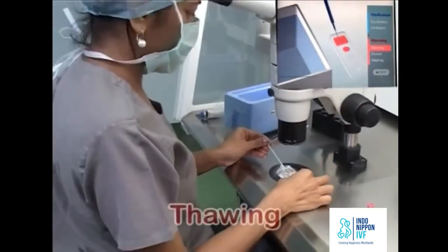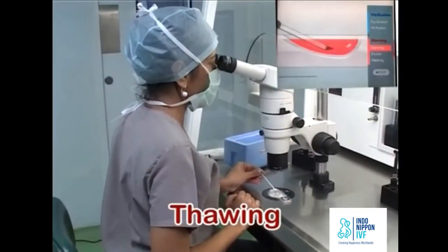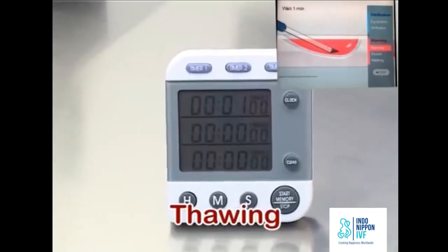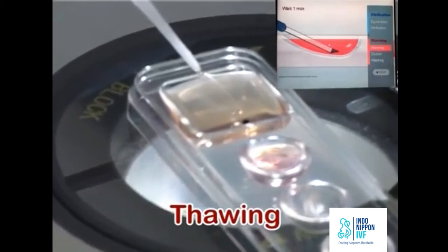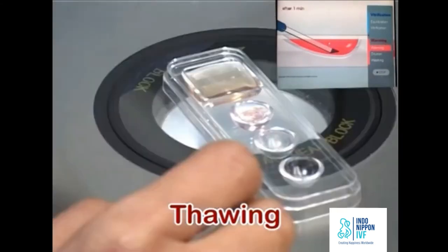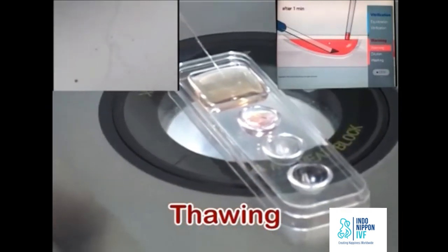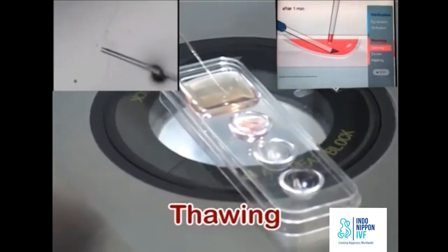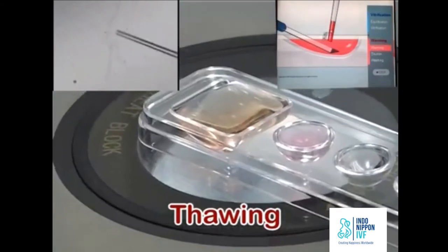Quickly immerse the cryotech into TS well within 1 second. This step is extremely crucial to achieve high warming rates. Start the stopwatch for 1 minute. Oocyte separates from the cryotech sheet by itself and begins to float. Confirm the oocyte existence in the TS well. Do not touch the oocyte for 1 minute. At the end of 1 minute, gently aspirate the oocyte and also aspirate TS till 3 mm length into the pipette.